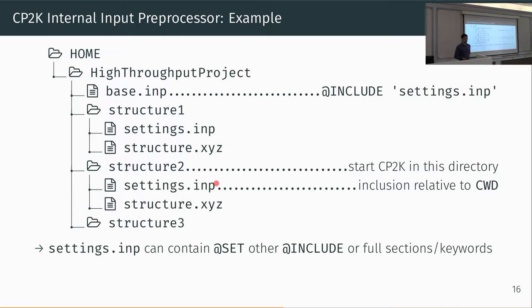Those included files can contain another set command to enable or disable certain sections, or also include other files. This can become quite complex — I've seen projects where they do this over five levels, and in the end it gets difficult to know which files were used and which sections were activated. Again, use the CP2K echo command to get a full input so you see what is actually being used. Make it easier for yourself later on by archiving those complete input files at some point.